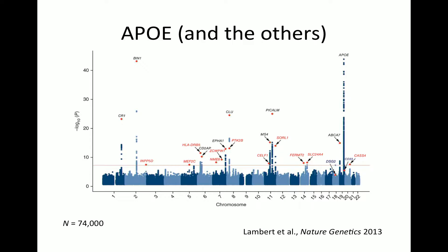Looking at these Manhattan plots — this one from a 2013 Nature Genetics study with 74,000 subjects — APOE always dwarfs the skyline. The only thing that comes close is BIN1, mainly because it's a much more common polymorphism, though its effect size is smaller than APOE. This is true of essentially all Alzheimer's disease studies: APOE dwarfs everything else.